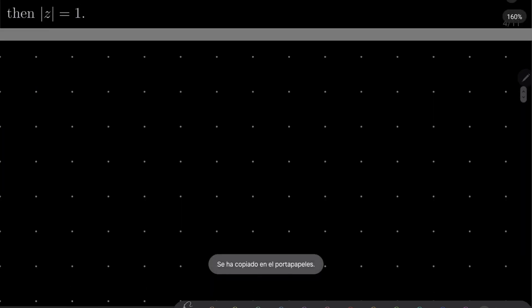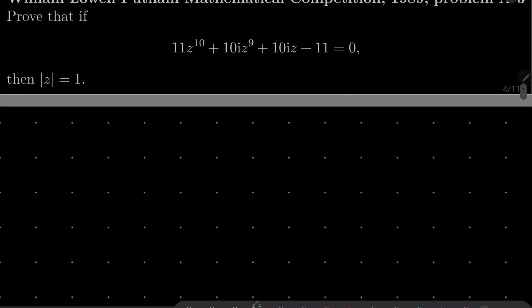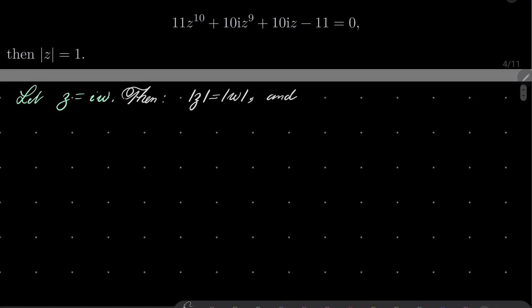Let's take our equation and set z equal to i times w. Notice that the absolute value of z equals the absolute value of w, because i has absolute value 1. Our equation can be rewritten as follows: 11 times i to the power of 10, which I'll write as i squared times i to the power of 8, times w to the power of 10, plus 10i times i to the power of 8 times w to the power of 9, plus 10i times i times w, minus 11, equals 0.